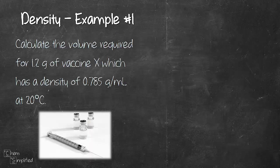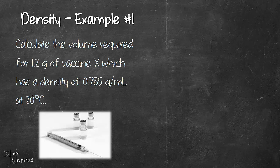In fact, let's go ahead and do an example. Let's assume that we need to administer 1.2 grams of vaccine X, knowing that vaccine X has a density of 0.785 grams per mL at 20°C. We can calculate the volume that we can easily measure out using the syringe.